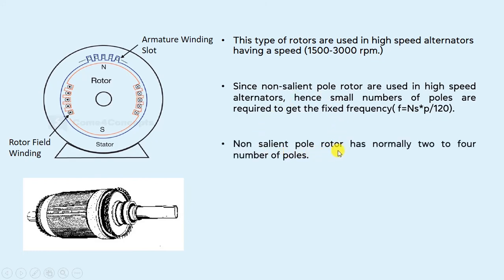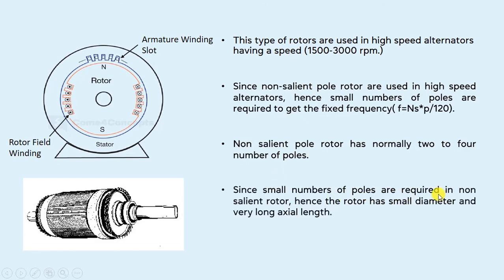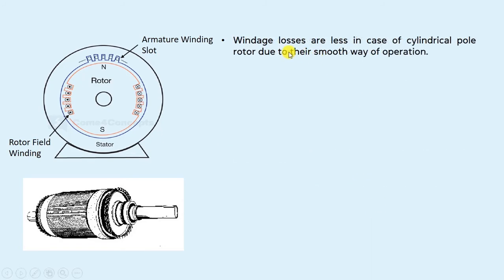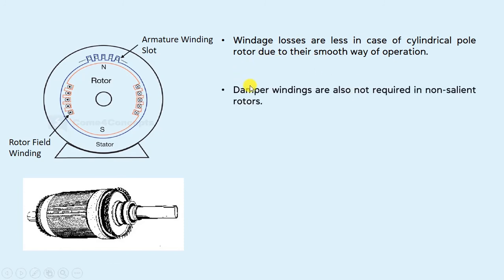Non-salient pole rotor normally has 2 to 4 number of poles. Since a small number of poles are required, the rotor has a small diameter and very long axial length. Moving forward, windage noise is also less in the case of the cylindrical pole rotor due to their smooth operation. Due to the uniform air gap between the stator and rotor, they have a smooth and less noisy operation, so windage noise is also less. Damper windings are also not required in a non-salient pole type rotor, as these rotors do not produce oscillations during operation.